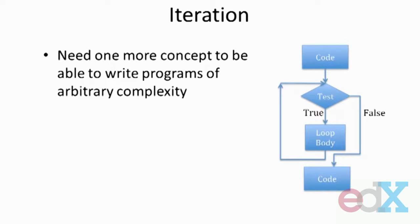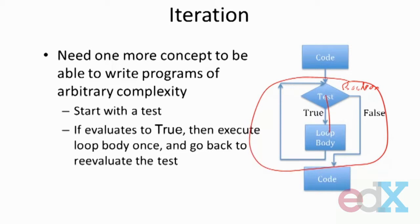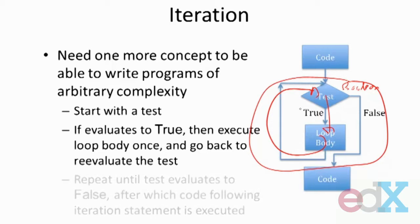The basic idea is straightforward. Given that we have some code we're executing, when we get to an iteration loop, which is this chunk right here, we start with a test. That will be a boolean that will return either true or false. If it's true, we're going to go down and execute some set of instructions, the body of the loop, and then go back around and do the test again. And we'll keep doing that. As long as the test is true, we'll execute that same set of instructions in the body over and over and over. Until finally, the test is false, in which case we skip around the loop body and pick up the computation elsewhere.